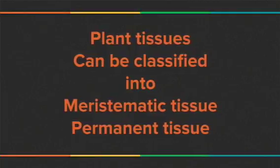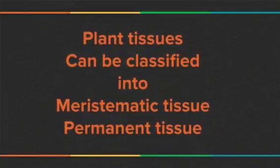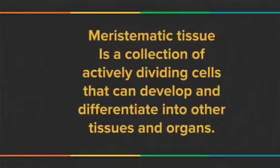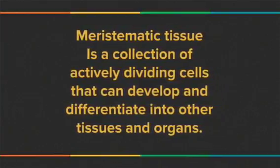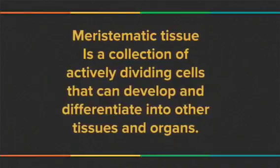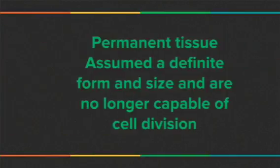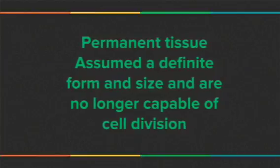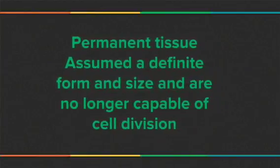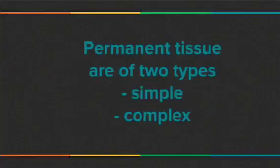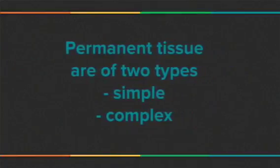Plant tissue can be classified into meristematic tissue and permanent tissue. Meristematic tissue is a collection of actively dividing cells that can develop and differentiate into other tissues and organs. Permanent tissue assumes a definite form and size and is no longer capable of cell division. Permanent tissue is of two types: simple and complex.